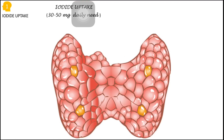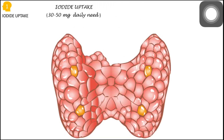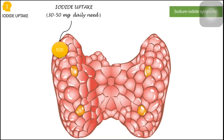A normal human being requires around 30 to 50 mg of iodide every day. This iodide is taken up by the thyroid gland through the sodium-iodide symporter, which is an ion channel normally present in the thyroid gland. Through this ion channel, iodine enters and is trapped inside the follicular cells of the thyroid gland. This process is mediated by TSH, the thyroid stimulating hormone.